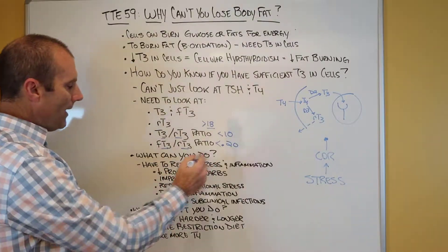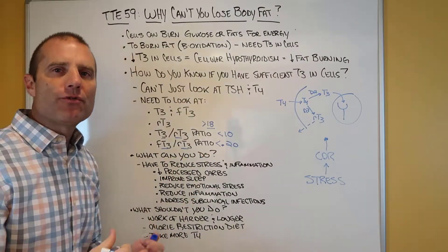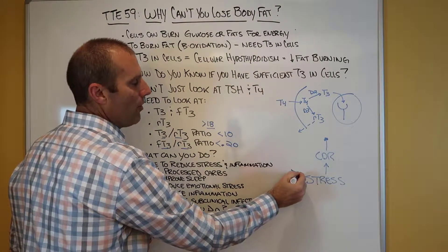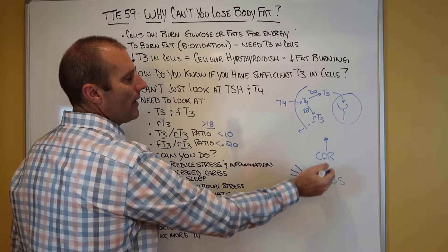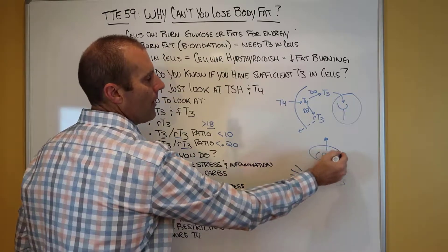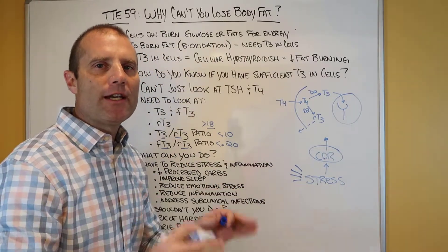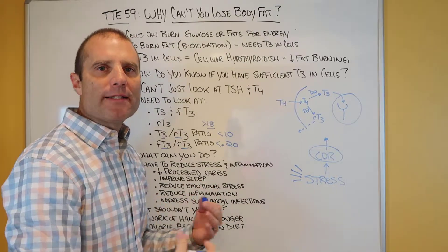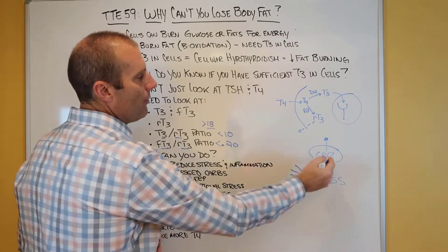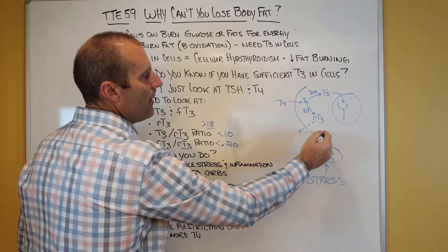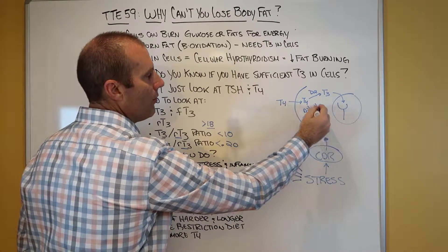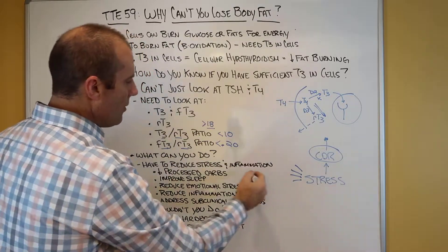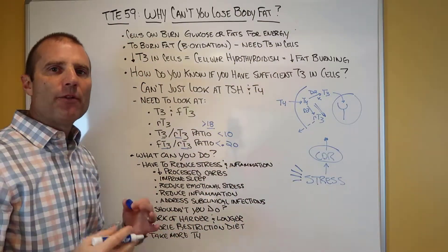So what can you do? You have to reduce the stress and inflammation, because stress — whether it's physical, chemical, emotional, or microbial — triggers what we call the cell danger response, which is an inflammatory and immune process. And when we trigger this cell danger response, T4 conversion to reverse T3 really starts to kick in and T3 production is decreased. So we need to reduce the stressors and the inflammation in the system.